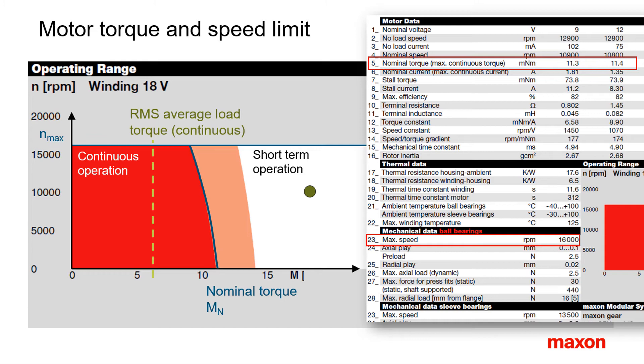The torque capability of the motor type is given as the nominal torque in line 5 of the torque data. It is a characteristic parameter for a motor type and size. It limits the continuous operating range.